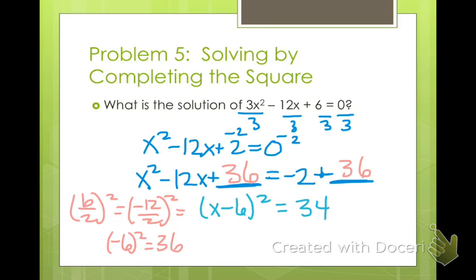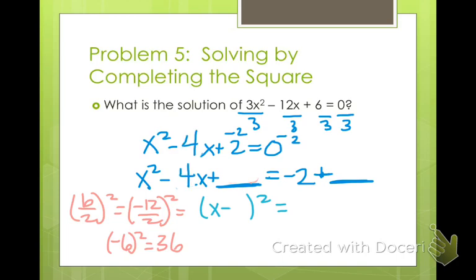Things were not looking well. I went back to look, and hopefully you figured out that I made a mistake right in the beginning. Yes, Ms. Eckblad makes mistakes — just don't tell anyone. 12 divided by 3 is not 12, it is 4. So let me fix all of this. Negative 4 — negative 2 squared is 4. So I'm going to add 4 to both sides. This is already so much more fantastic. So this is (x minus 2) squared equals 2.